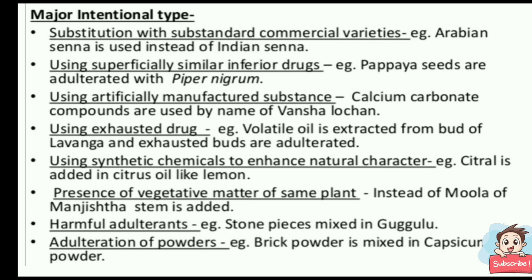Major intentional types: substitution with substandard commercial varieties — Arabian senna is used instead of Indian senna; using superficially similar inferior drugs — papaya seeds are adulterated with Piper nigrum; using artificially manufactured substances — calcium carbonate compounds are used by the name of Vanshalochan; using exhausted drugs — volatile oil is extracted from buds of Lavanga and exhausted buds are adulterated; adding synthetic chemicals to enhance natural character — citral is added to citrus oil; vegetative matter of same plant added instead of Moola of Manjistha; and harmful adulterants such as stone pieces mixed in Guggulu, or brick powder mixed in Capsicum powder.